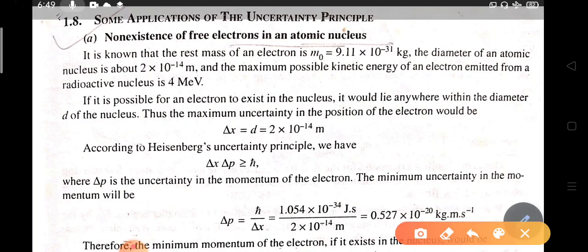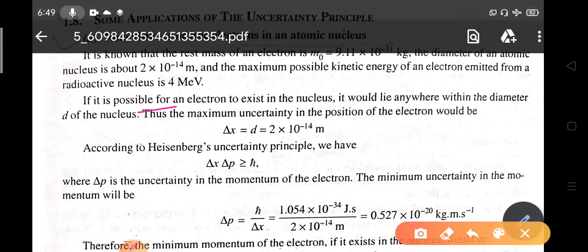If it's possible for an electron to exist in the nucleus, it would lie anywhere within the diameter d of the nucleus. The maximum uncertainty in the position of the electron would be Δx = d = 2 × 10⁻¹⁴ m.